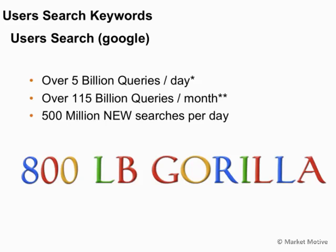Users search almost exclusively on Google, which has 70-80% market share. When we talk about SEO, most times we're talking about Google. They serve over 5 billion queries per day — that's over 115 billion queries per month. Of those 5 billion queries per day, around 15% are new searches, meaning something that's never been searched for before. So users are searching phrases and keywords that have never been searched on Google before — they're unique.